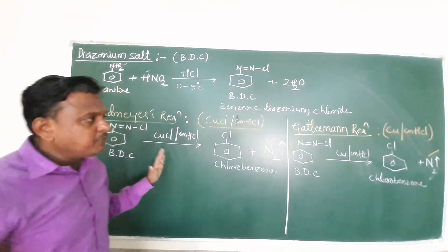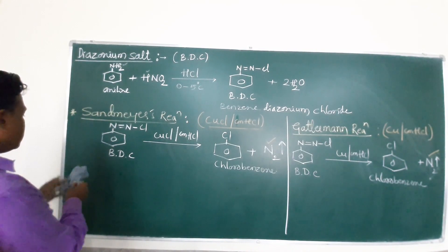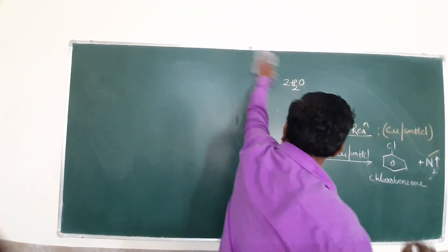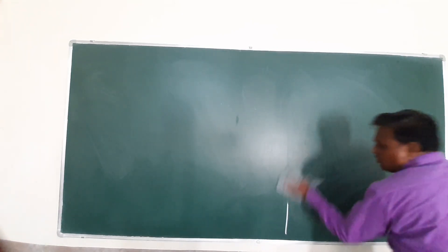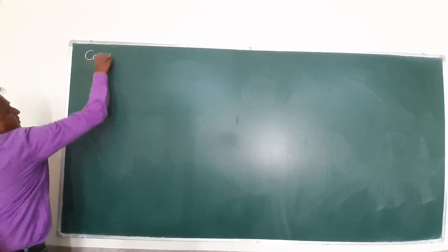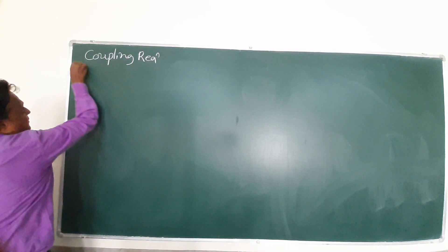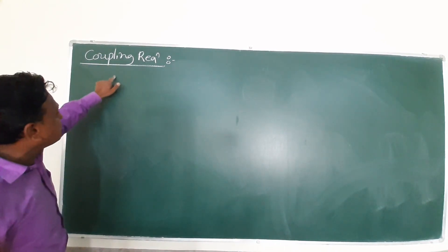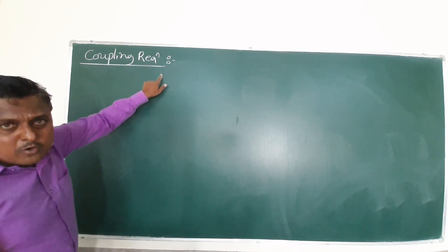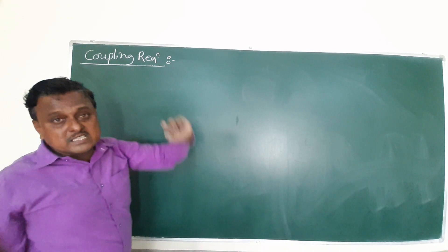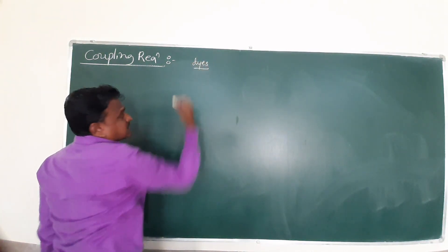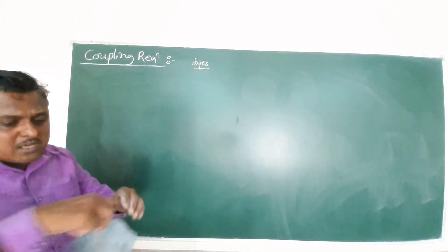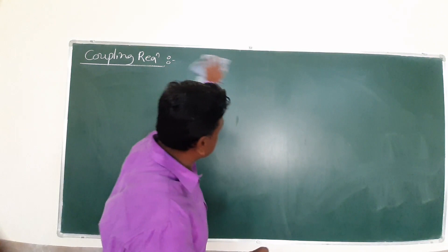Lastly, we have another reaction using BDC — benzene diazonium chloride. We have two important reactions commonly called coupling reactions. Coupling means joining one to another. The coupling reaction is the combination of benzene diazonium chloride with either phenol or aniline to form a dye — an azo dye. This is called the coupling reaction.